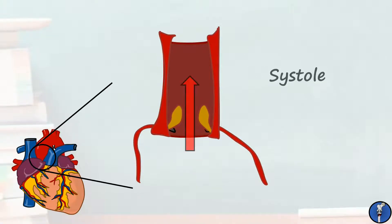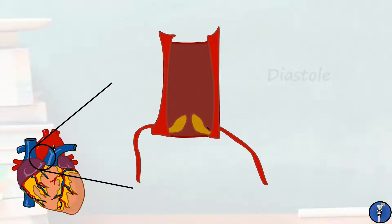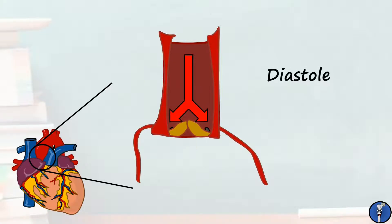During systole, when the heart contracts to expel blood, the aortic valve opens and blood rushes out into the systemic circulation. However, during diastole, when the heart is relaxed and filling, the blood is allowed to flow backwards towards the heart. It's prevented from re-entering the heart by the aortic valve, so instead flows down the coronary arteries and into the cardiac vasculature.